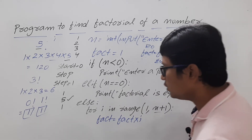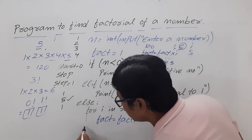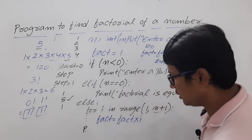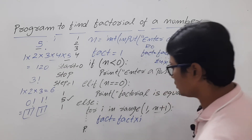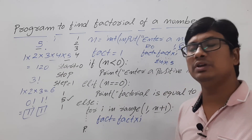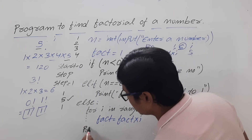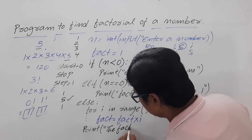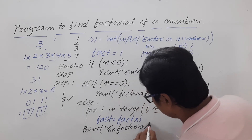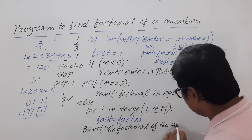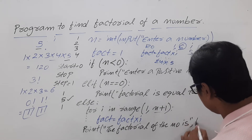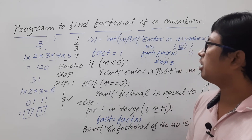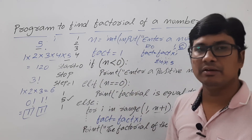Once I have the fact value, I need to display it. The print statement belongs at the same indentation level as the for loop, not inside it — indentation is very important in Python. I will write: print('The factorial of the number is', fact). This is the complete Python program to compute the factorial of a given number.